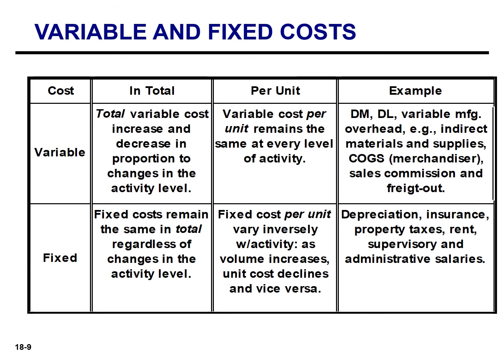This slide summarizes everything we've covered. For variable costs, total variable costs increase and decrease in proportion to changes in activity level, while variable cost per unit remains the same at every level of activity — in our example, $1.10 per dozen. Examples include direct materials, direct labor, variable manufacturing overhead such as indirect materials and supplies, cost of goods sold, sales commission, and freight. For fixed costs, they remain the same in total, and fixed cost per unit varies inversely with activity — as volume increases, unit costs decline. Common examples are depreciation, insurance, property tax, rent, supervisory, and administrative salaries.